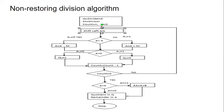When we shift left, the most significant bit of A is lost, and the most significant bit of Q is shifted into the least significant bit of A. The least significant bit of Q will be left unoccupied and will be replaced after taking a decision depending upon the A sign bit.